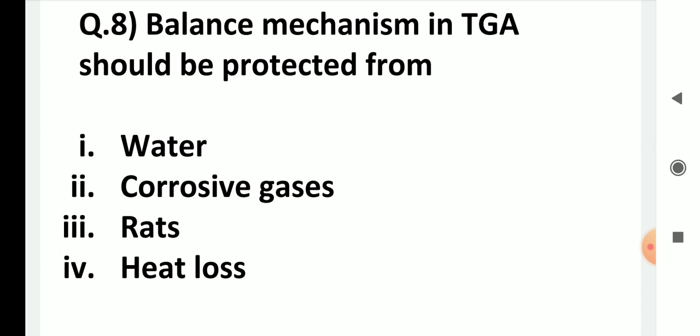Balance mechanisms in TGA should be protected from: water, corrosive gases, rats, or heat loss? The right answer is corrosive gases, because corrosive gases will damage the mechanism of the balance.